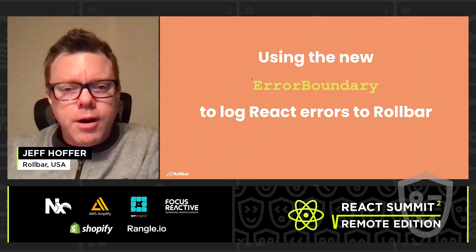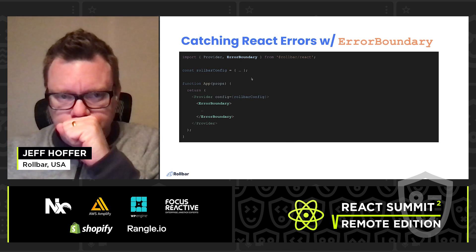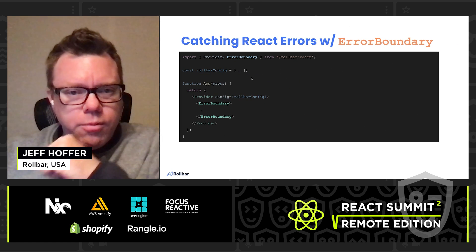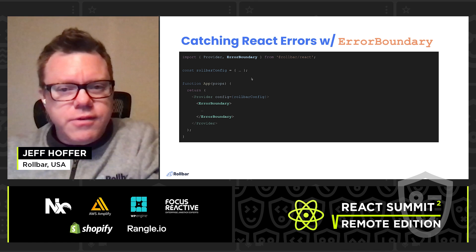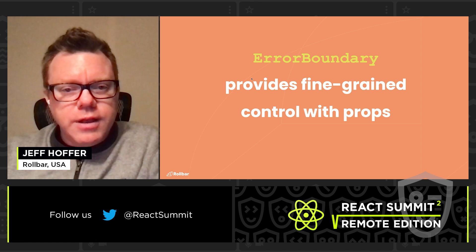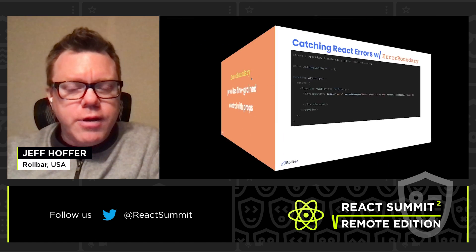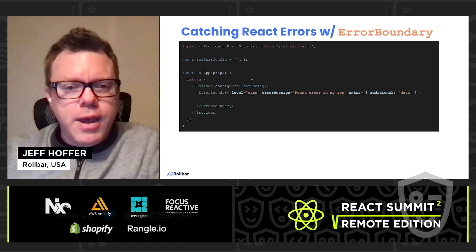Next, we have the new Rollbar error boundary that you can use to automatically capture and log React errors to Rollbar. With our provider in place, it's as simple as including it somewhere in your React tree to wrap an error boundary around anything below it. To provide flexibility to meet your specific needs, the error boundary offers several props for fine-grained control over the behavior.